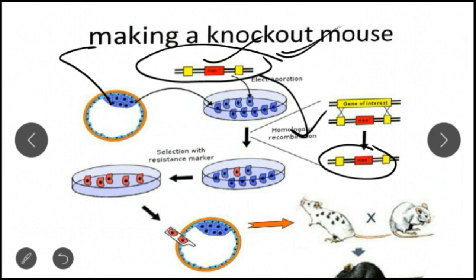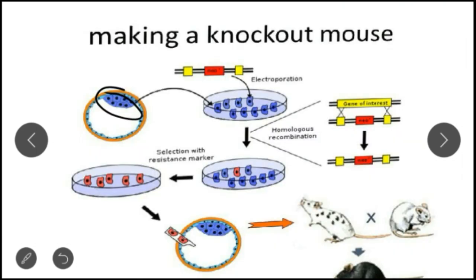We use blastocyst cells from the embryo of a fertilized mouse — we isolate these and call them embryonic stem cells (ES cells). We choose stem cells for a very specific reason: they have the capability of creating a whole organism and all types of cells. So if we alter these cells or change the gene of interest, it will automatically change all types of cells in the mouse.